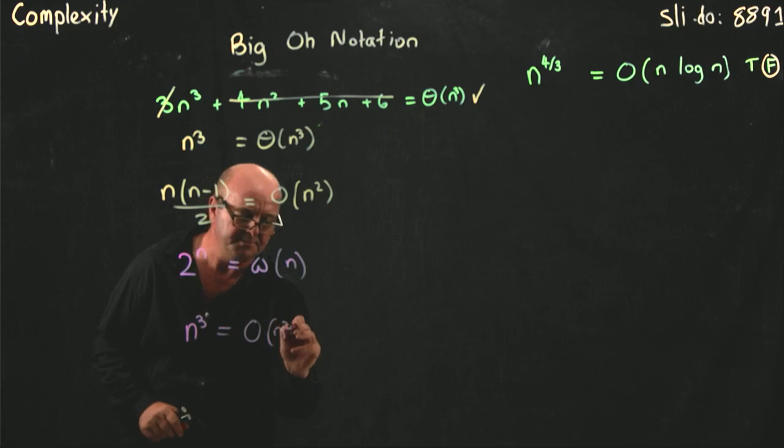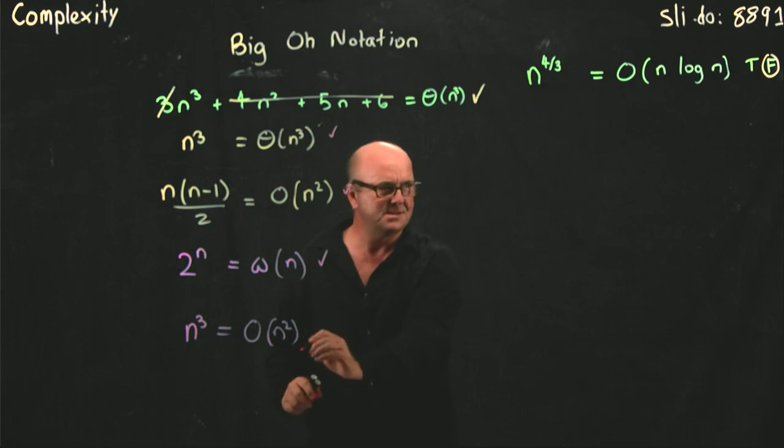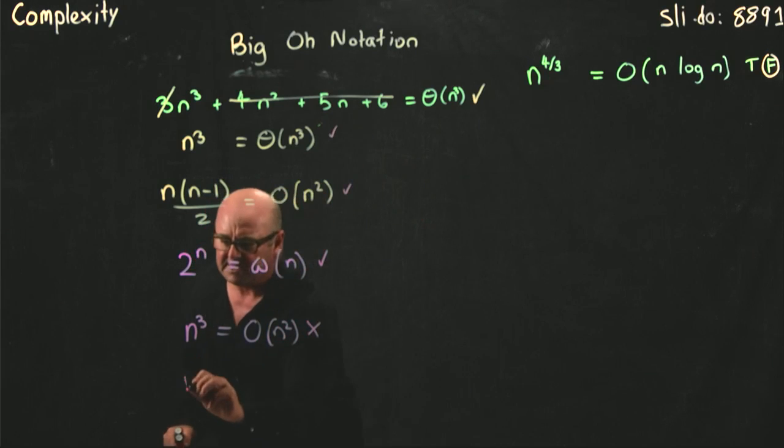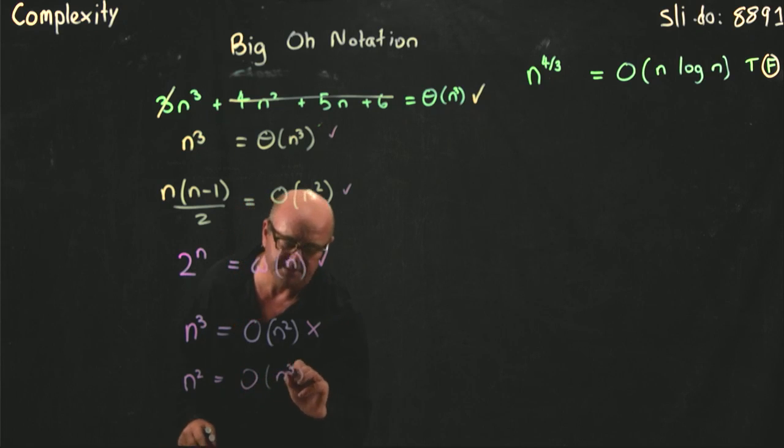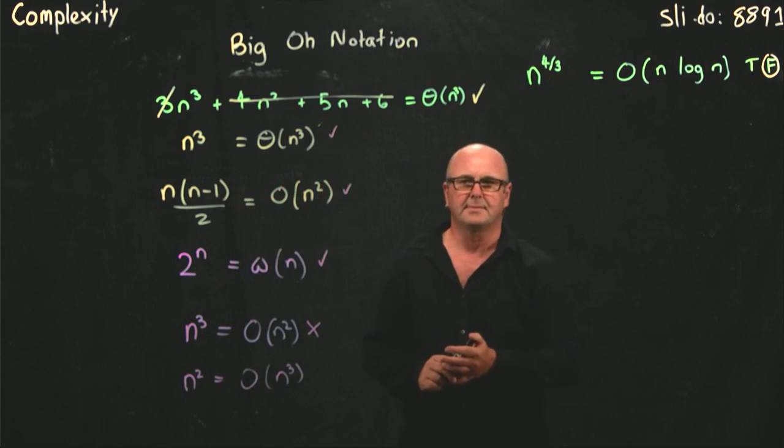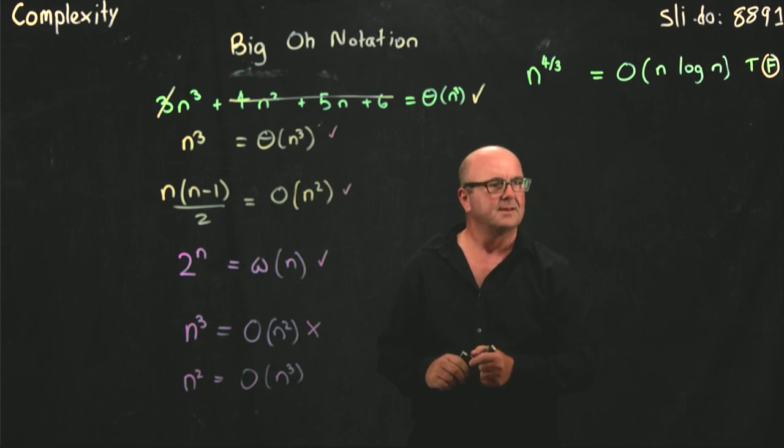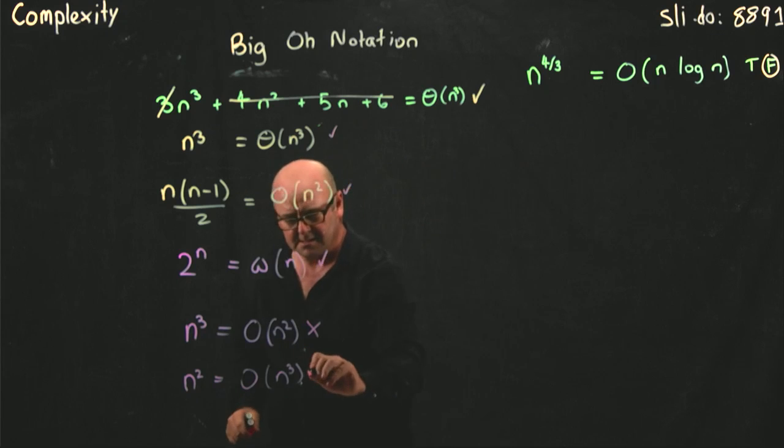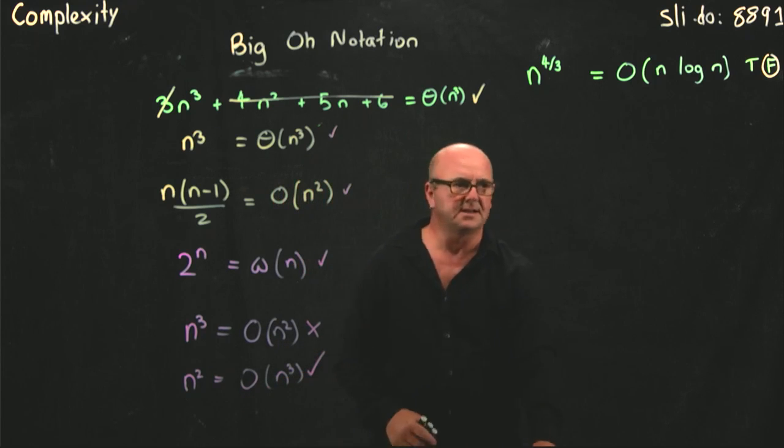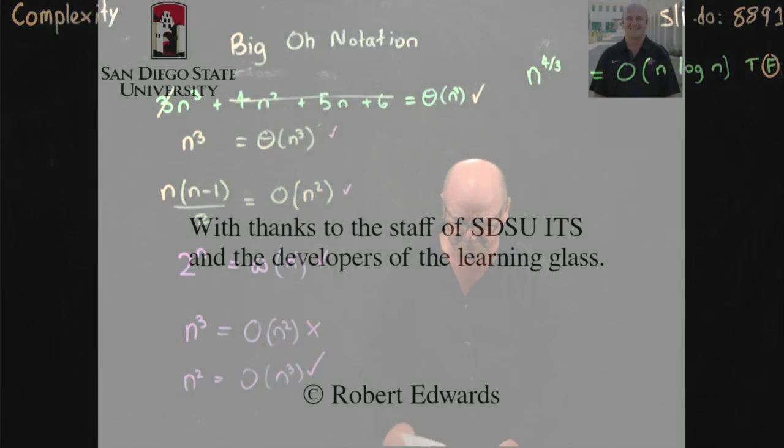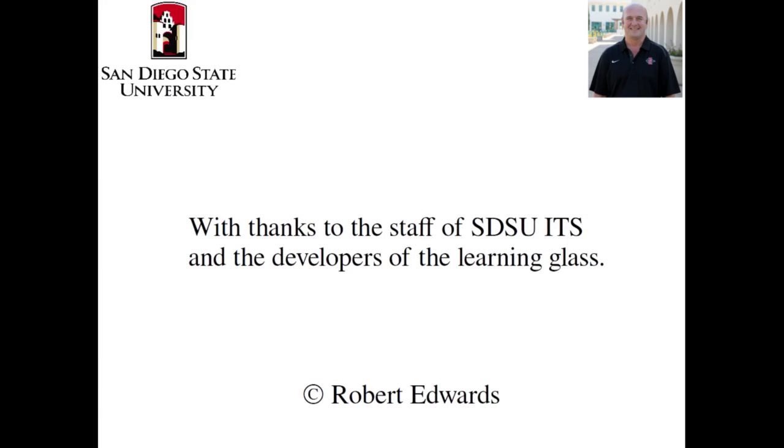Is n cubed big O of n squared? Yes or no? No. Definitely not. Is n squared big O of n cubed? Yes it is. n squared does not grow as fast as n cubed. So, here we are. There is another one.